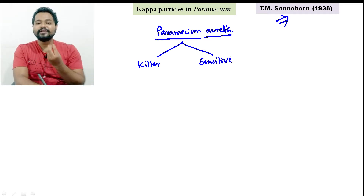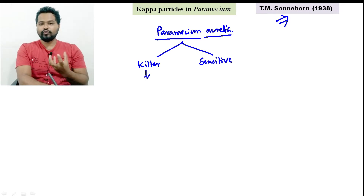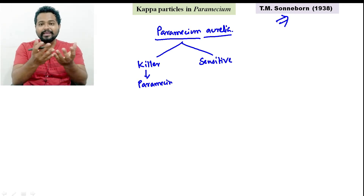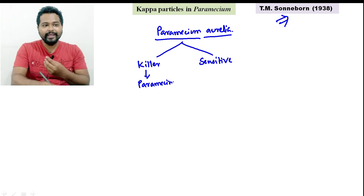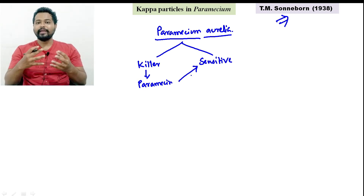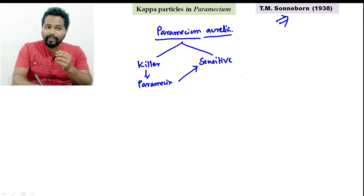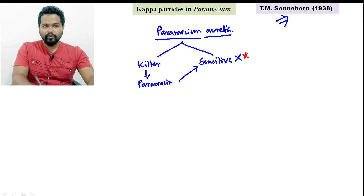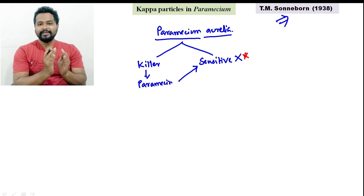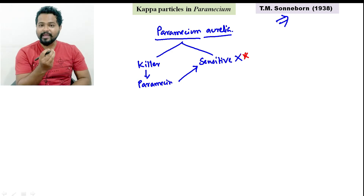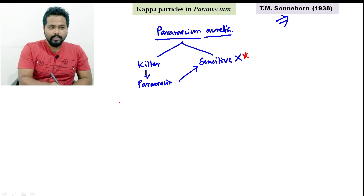This killer strain releases a toxin — a toxic compound. This is the killer strain of Paramecium. The killer strain maintains a Duta condition. I will tell you that the Duta condition is necessary — two conditions are necessary.